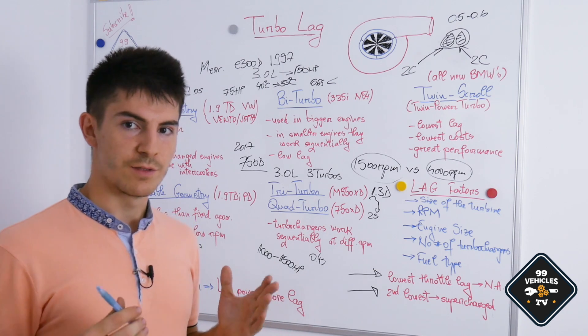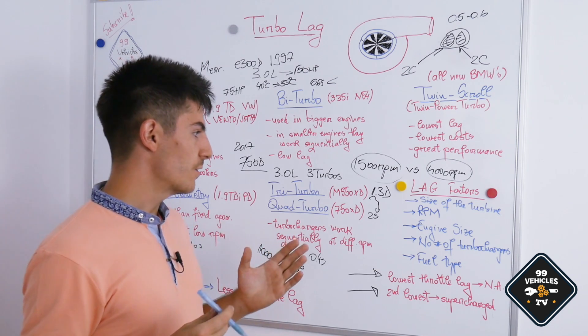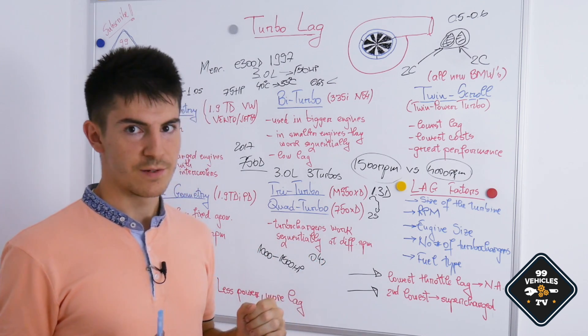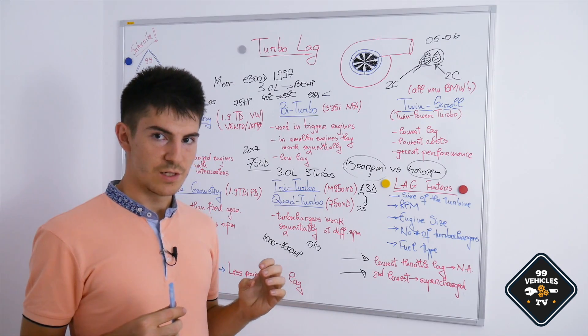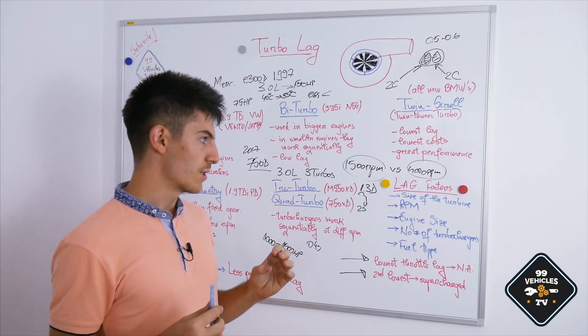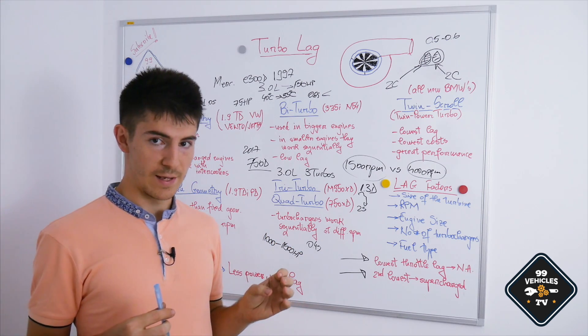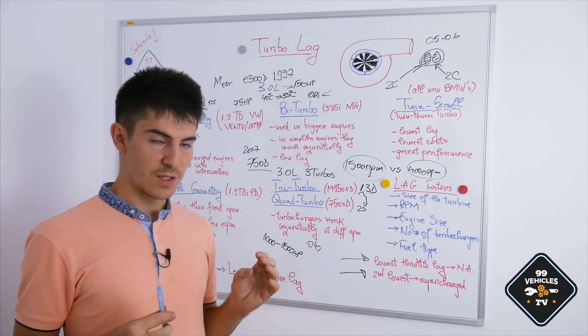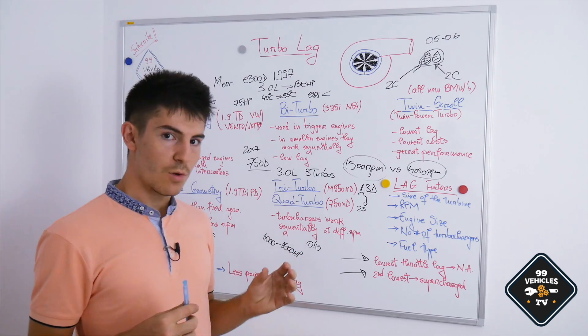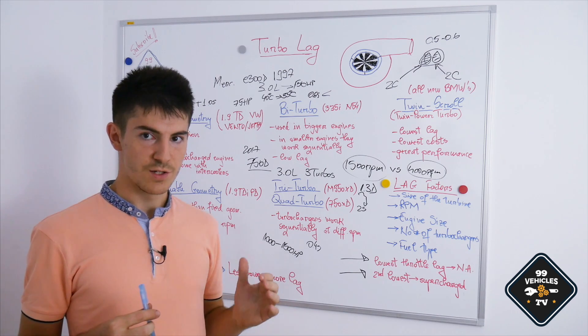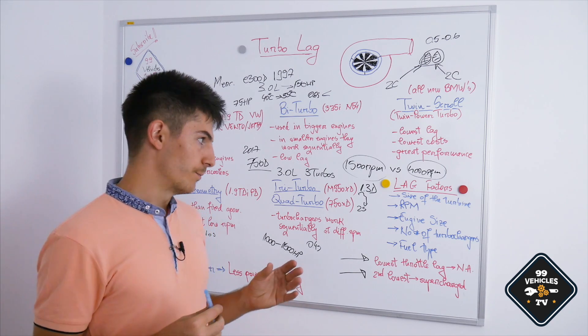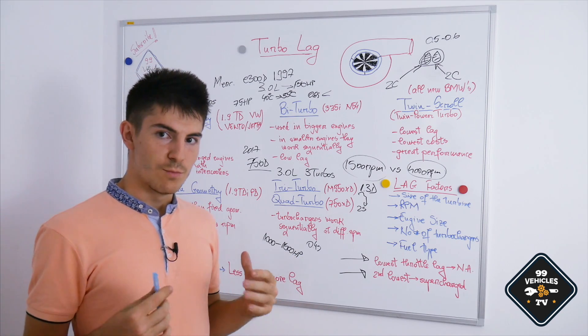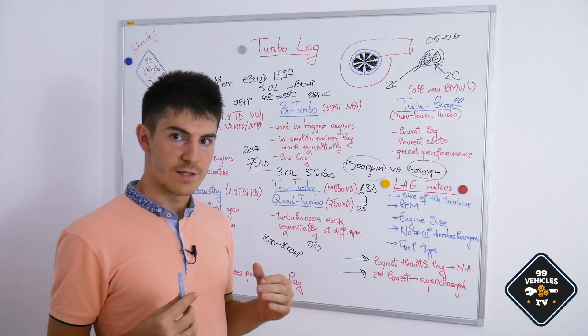Now, let's discuss the lag factors. The first and one of the most important factors of lag is the size of the turbine. If we have a small turbocharger, it will build pressure a little bit faster compared to a bigger one, so lag will be smaller. That's why in twin-turbocharged gasoline engines, we have a smaller turbo and a bigger turbo which work sequentially. At low RPM, the smaller turbo kicks in, and at higher RPM, when we need more pressure, the bigger turbine kicks in.